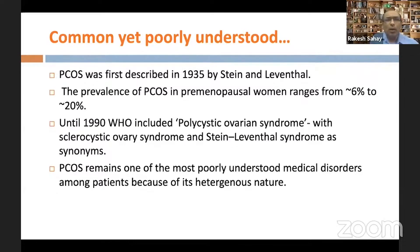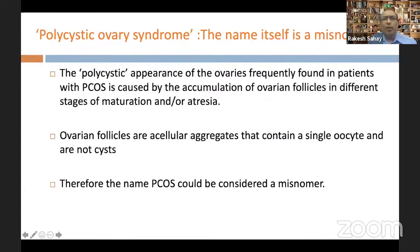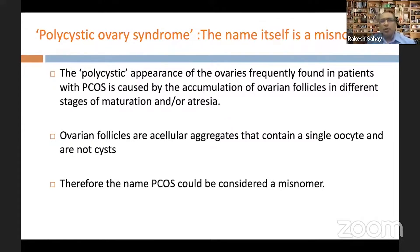Looking at the name itself — PCOS — we earlier used to call it a disorder, but now we understand it's rather a syndrome. Even the current name 'polycystic ovarian syndrome' is somewhat a misnomer: the polycystic appearance of the ovaries is caused by accumulation of ovarian follicles in different stages of maturation or atresia, and ovarian follicles are acellular aggregates containing a single oocyte — they are basically not cysts.